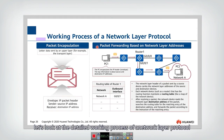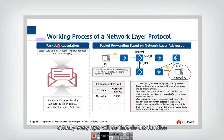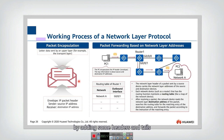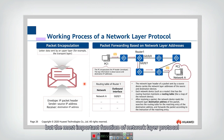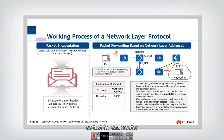Let's look at the detailed working process of a network layer protocol. First, they will do packet encapsulation and decapsulation — every layer will do this function. They will put the payload into a packet by adding some header and tail. But the most important function of network layer protocol is packet forwarding. Each router will use routing protocols to calculate a correct route.